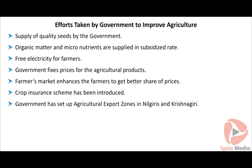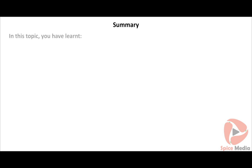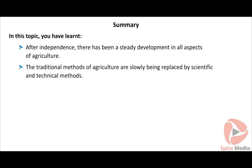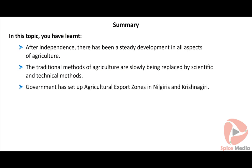Government efforts to improve agriculture include: supply of quality seeds, organic matter and micronutrients supplied at subsidized rates, free electricity for farmers, government-fixed prices for agricultural products, farmers markets to help farmers get better prices, and the introduction of crop insurance schemes.